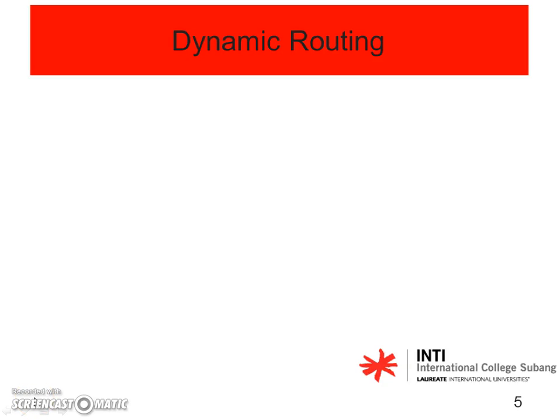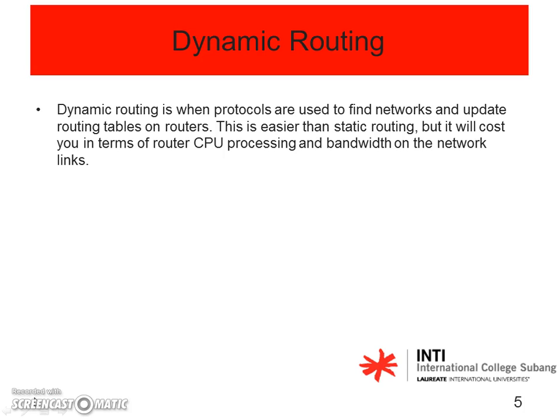We're going to look at dynamic routing. As you know, we have discussed static routing. Dynamic routing is when protocols are used to find networks and update routing tables on routers. It's going to be easier than static because with static you need to configure manually one by one, whereas with dynamic the routers will learn by themselves. Of course it will be costly in terms of router CPU processing and bandwidth on the network links.